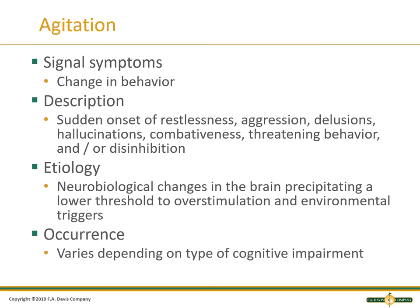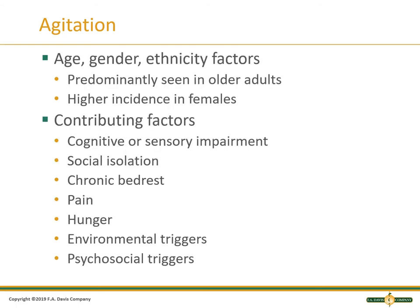When we talk about agitation, we talk about the signal symptom — it's a change in behavior. This is that sudden onset of restlessness, aggression, delusions, hallucinations. This is from neurobiological changes in the brain that precipitate a lower threshold to overstimulation and environmental triggers. Something is setting off the agitation, whether it's metabolic from a differential diagnosis or something in the environment. The occurrence varies depending on the type of cognitive impairment the patient is experiencing.